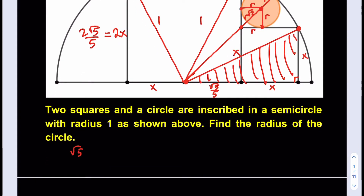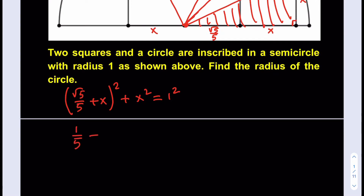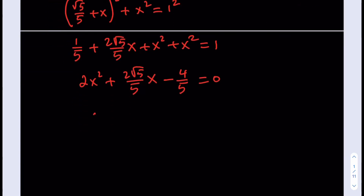Using the Pythagorean theorem: (√5/5 + x)² + x² = 1². Expanding: 1/5 + 2(√5/5)x + x² + x² = 1. Rearranging: 2x² + (2√5/5)x + 1/5 − 1 = 0, which gives 2x² + (2√5/5)x − 4/5 = 0. Dividing everything by 2 simplifies the equation.